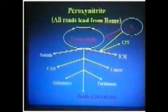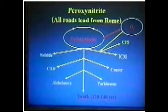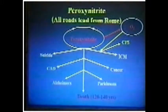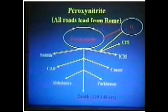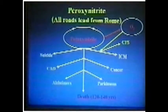Peroxynitrite, as a free radical, probably ultimately kills us. It degrades cellular function and probably leads, in early life, to either suicide or cardiomyopathy. Later in life, coronary disease and cancer. And then last in life, Alzheimer's and Parkinson's disease. But there is no way out of this — you can think of free radicals as the power that's pushing you toward death. Which way you die depends on genetic factors, environmental influences, and chance alone.